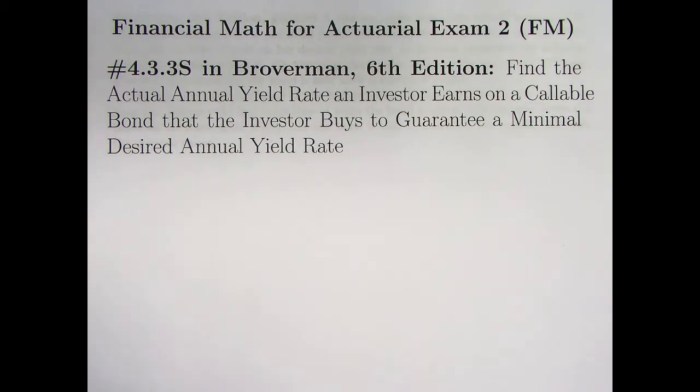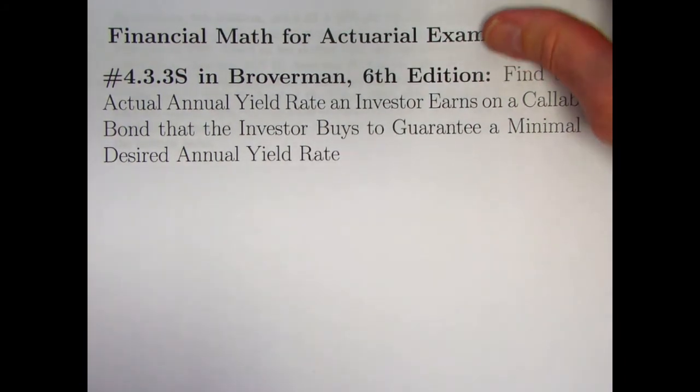We will be finding the actual annual yield rate that an investor earns on a callable bond that the investor buys in such a way as to guarantee a minimal desired annual yield rate, but the actual yield rate will be higher.